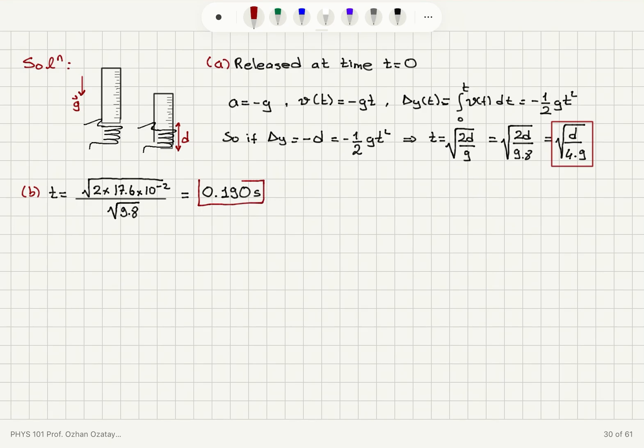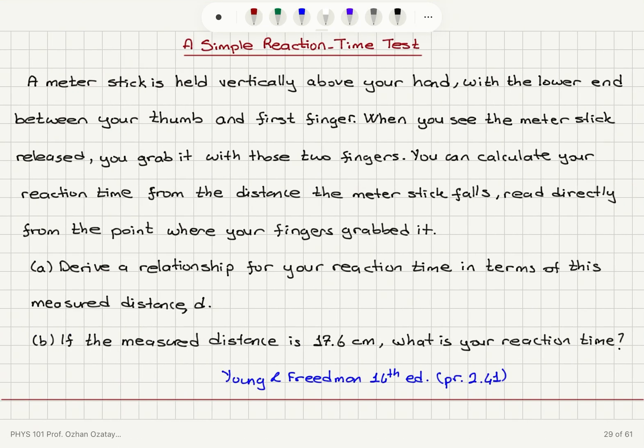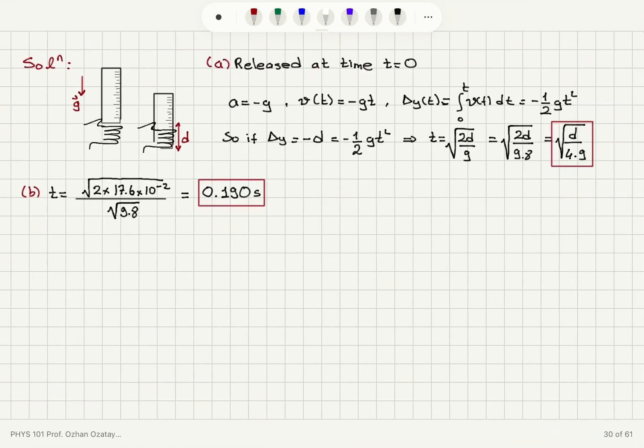To summarize, we have a meter stick held vertically above our hand, lower end between our thumb and first finger. We release the meter stick, it falls a distance d, and in our reaction time we close our fingers again and measure the distance that it has fallen. From this we calculate our reaction time, and for a reading of 17.6 centimeters, what the numerical value should be.